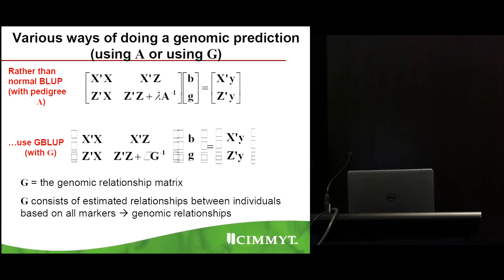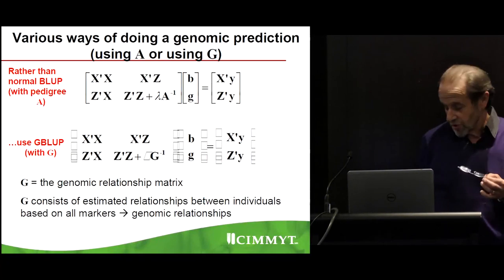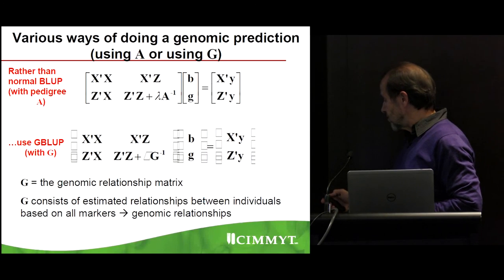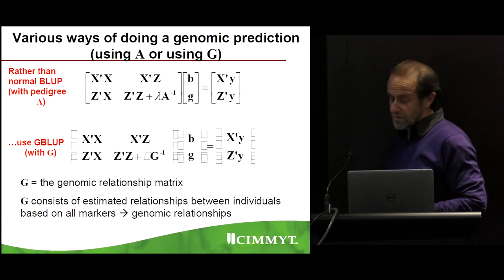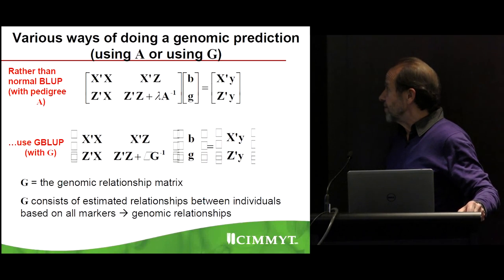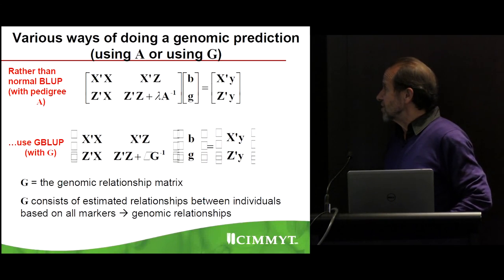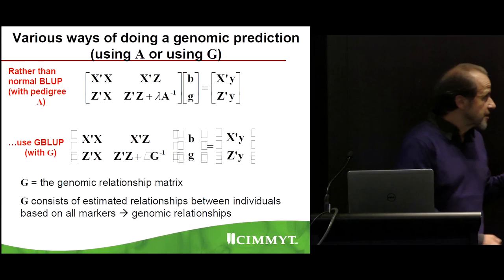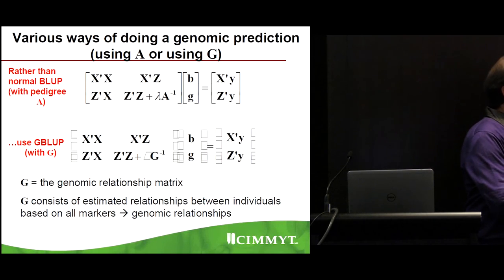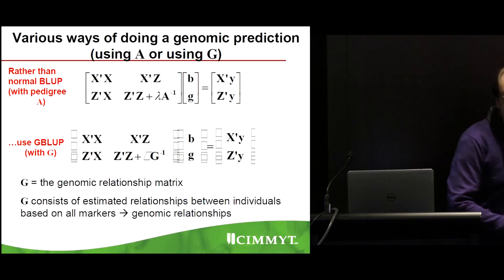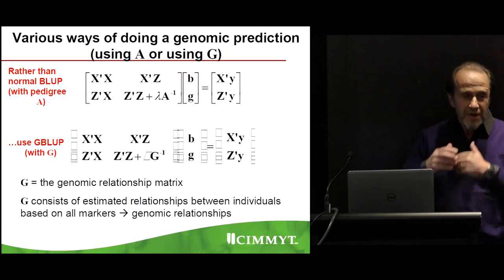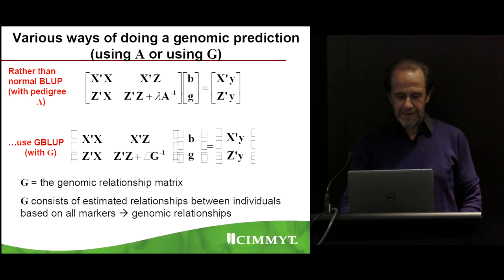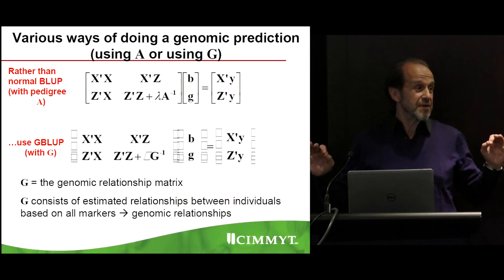So this is a mixed model equation using the G matrix — using markers. Another way to do genomics is using both G and A. The genomic relationship matrix consists of estimated relationships between individuals based on all markers, and that is the end of this particular theme.